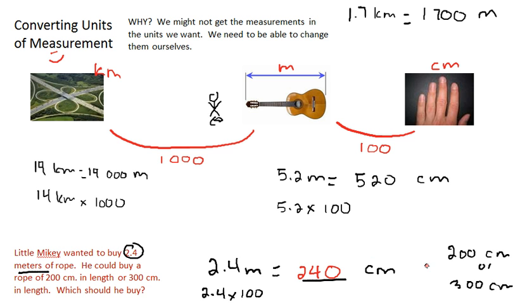If that's the case, if I buy the 200 centimeter rope, I'm going to be short. I'm not going to have enough. I need 240, and I only have 200, so I'm absolutely going to go for 300 and have 60 left over.